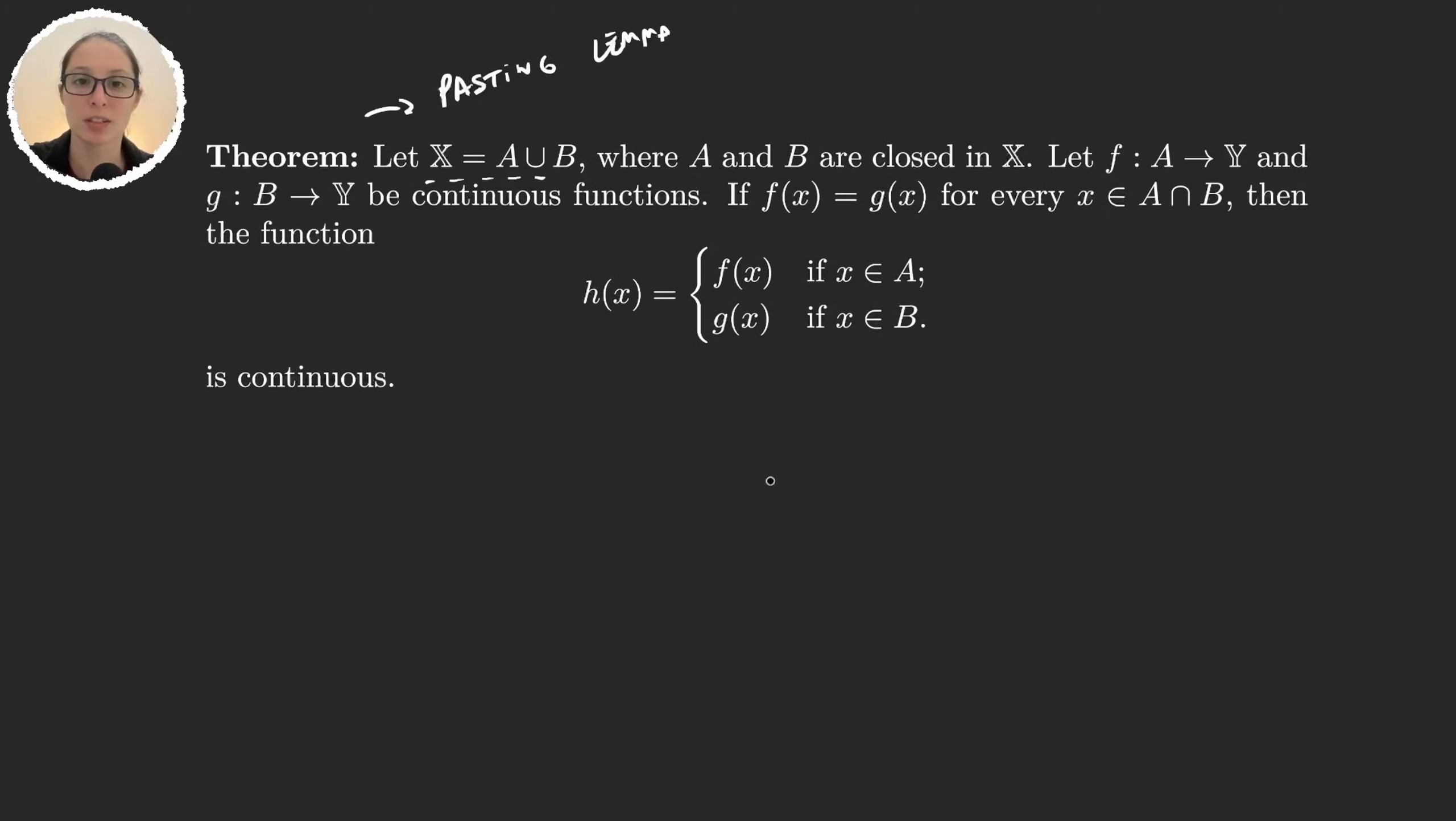So let's make a drawing to see what this theorem is actually stating. Suppose this is a, and a and b have to be closed. So this is a, and this is b. Let's suppose that my function f does something like this. And in this middle set here, it's constant.